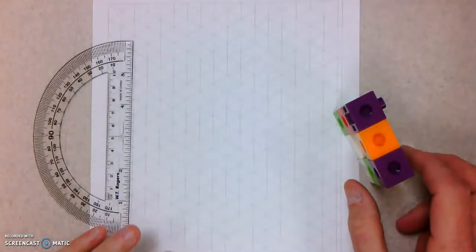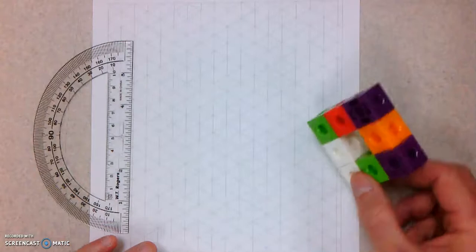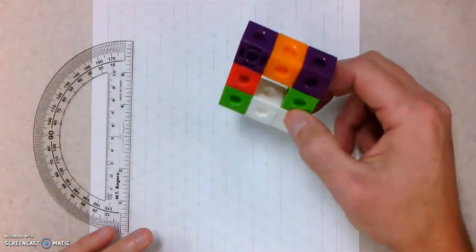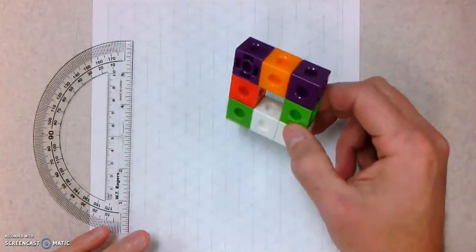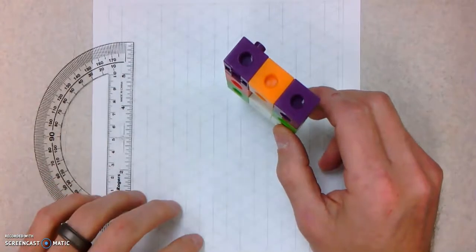For part three of our isometric assignment, what you're supposed to do is create your own shape and then draw it on isometric paper.